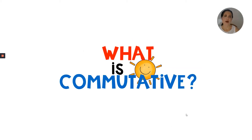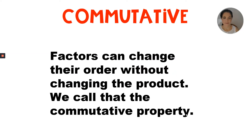What is commutative? Factors can change their order without changing the product. We call that the commutative property.